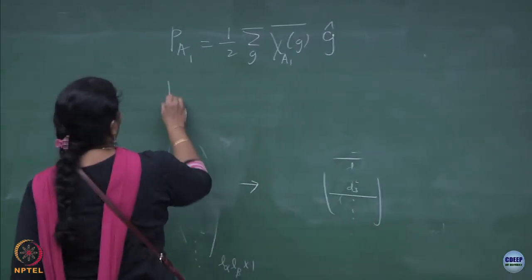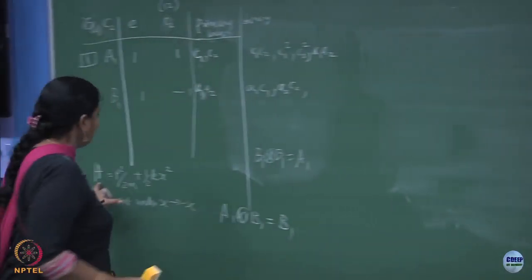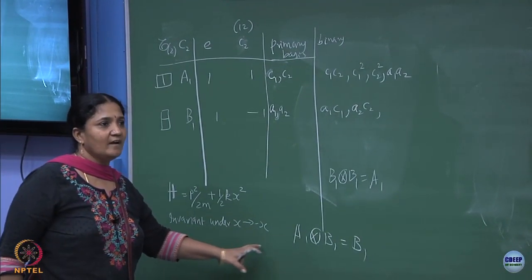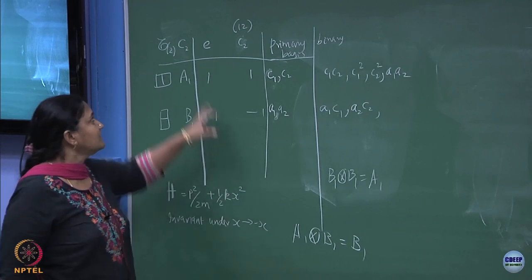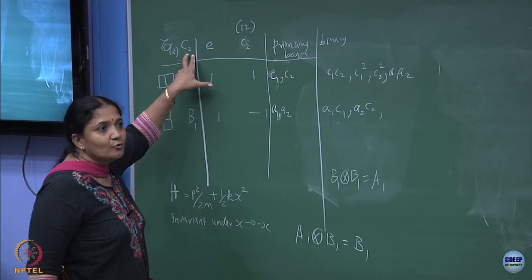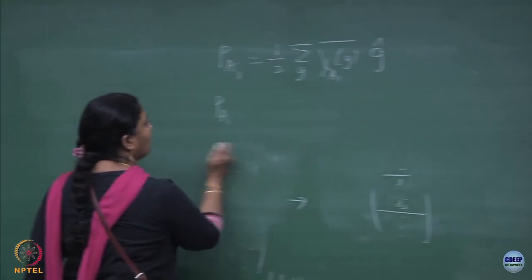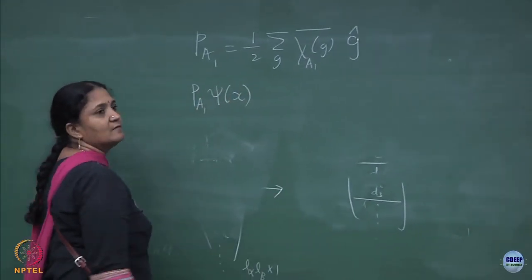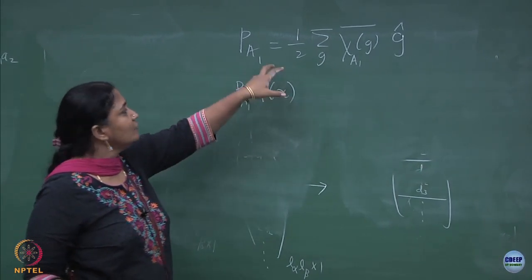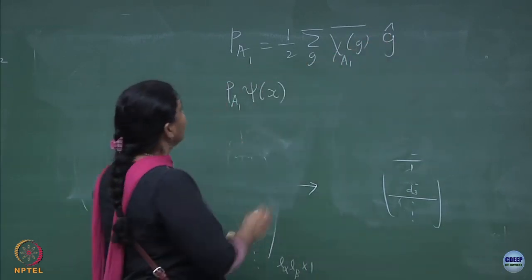So you can apply P_A1. If you remember, in the harmonic oscillator I said that the Hamiltonian is invariant under x going to minus x. It has a group symmetry which is isomorphic to permutations of 2 objects, or the C2 group. You can see that if you operate it on psi(x), the projection operator for irrep A1 on psi(x) using the operator form.